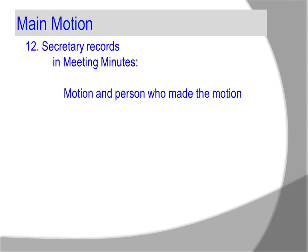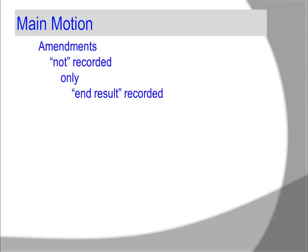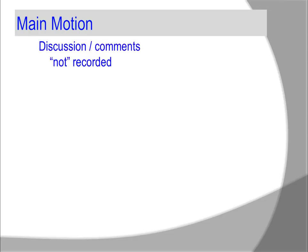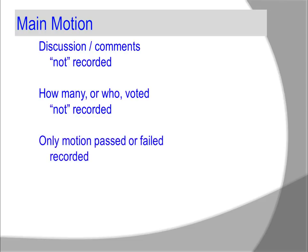The secretary records in the meeting minutes the motion and the person who made the motion. The person who made the second is not recorded. Amendments are not recorded — only the end result is recorded. If amended, the person who made the amendment is recorded: 'The motion made by Joseph Blow and amended by Jane Hathaway.' Discussion and comments are not recorded. How many or who voted is not recorded. Only whether the motion passed or failed is recorded.